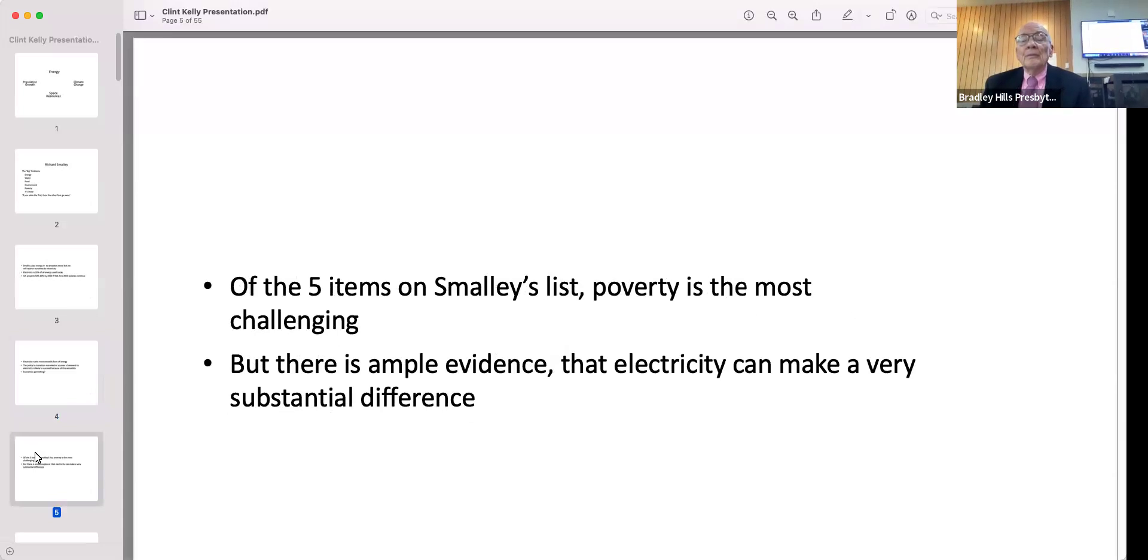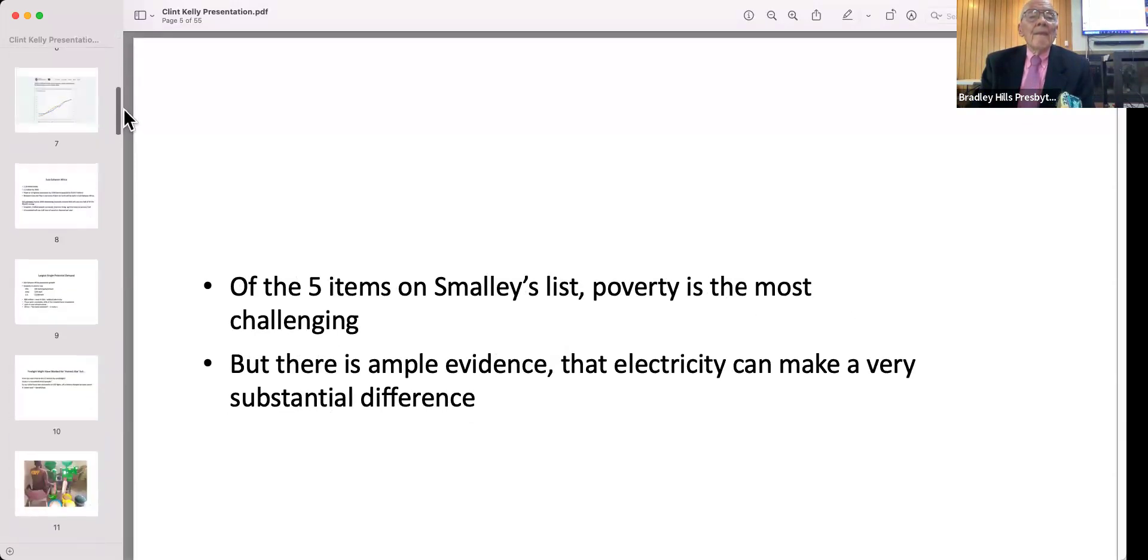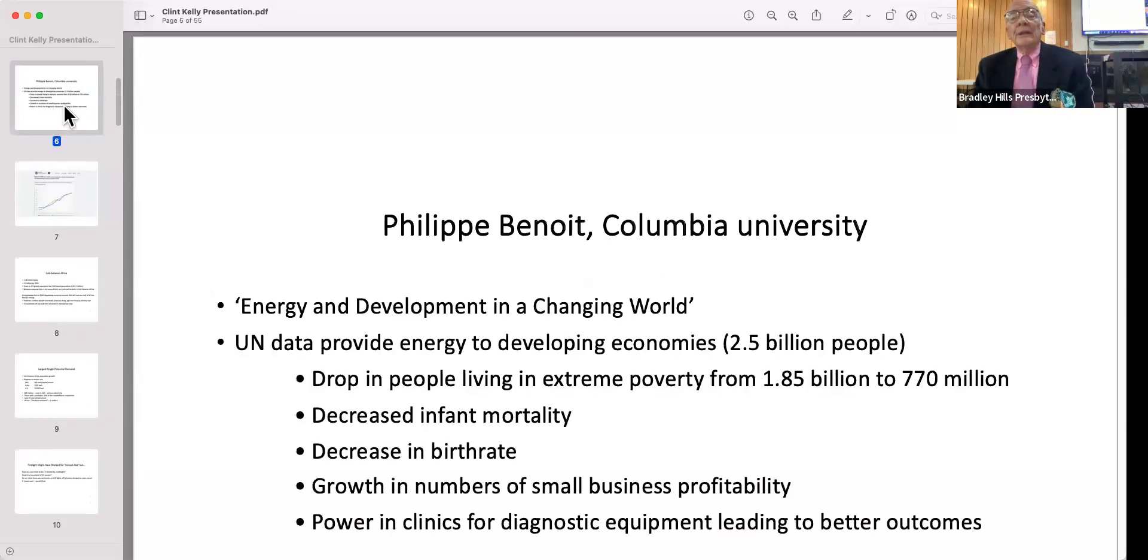Carl and I have worked on a number of projects in Africa providing energy via solar panels and batteries to a number of locations, primarily but not exclusively for lighting. There's an interesting study done at Columbia University a few years ago where they took UN data on 48 less developed economies of some 2.5 billion people and studied the effects that increasing energy to those populations had on what one might loosely say the quality of life. These are some of the results that are in their paper.